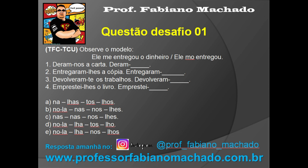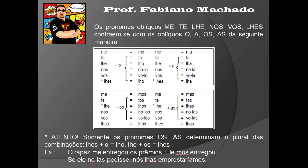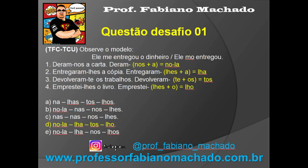Vamos lá, para resolver esse desafio, essa questão, eu preciso saber um pequeno conceito. Os pronomes oblíquos me, te, lhe, nos, vos, lhes contraem-se com os oblíquos o, a, os, as da seguinte maneira: me mais o → mo, te → to, lhe → lho, nos → nolo, vos → volo, lhes → lho. Atenção: somente os pronomes o, a, os, as determinam o plural das combinações. Então, se eu tiver lhes mais o vai ficar lho; se eu tiver lhe mais os vai ficar lhos. É o o, a, os, as que vai determinar o singular e o plural. Então eu não posso pluralizar se for lhes e eu tiver ele no singular. Isso é o que aconteceu no desafio, então vocês têm que prestar atenção nessa situação. Ali eu coloquei alguns exemplos.